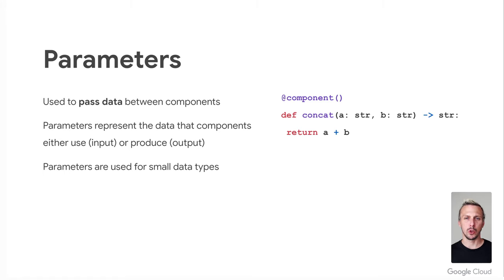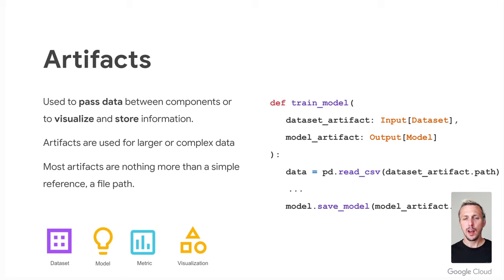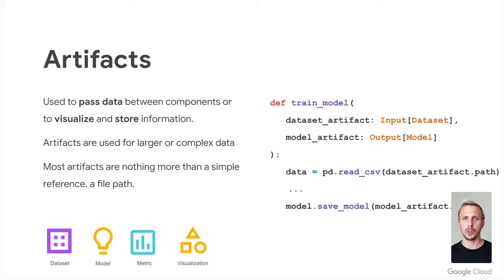Parameters are used to pass data between components — they represent data that a component either uses as input or produces as output. Parameters are used for small data types like int, float, string, bool, dict, or lists of them. With machine learning, we also work with more complex data structures, and for that we use artifacts. Similar to parameters, artifacts are also used to pass data between components or to visualize and store information. Artifacts are used for larger and more complex data like training data. All artifacts are automatically stored in Google Cloud Storage based on the bucket path defined during pipeline creation. Most artifacts like datasets and model artifacts are nothing more than a simple reference — a file path.